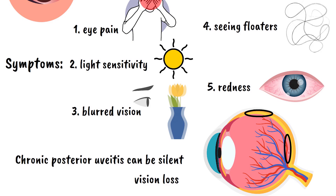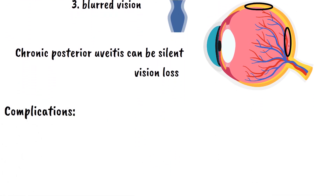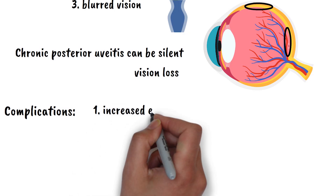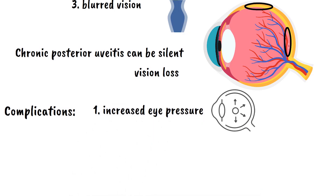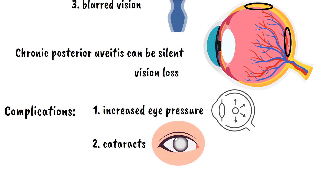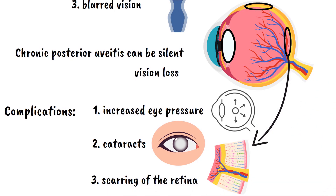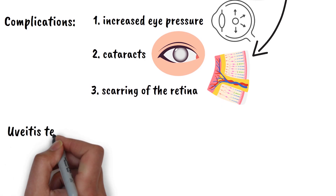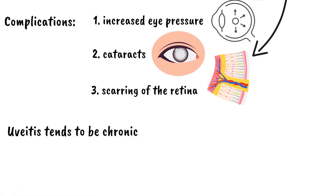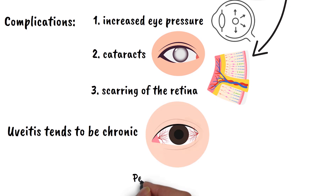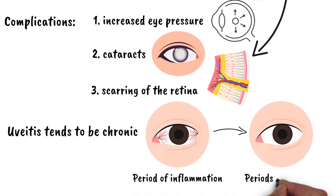The inflammation associated with uveitis can lead to several serious complications if not properly managed. Increased eye pressure similar to glaucoma can develop when inflammation affects the eye's drainage system. Cataracts can form when inflammation affects the lens. Most seriously, the inflammation can cause scarring of the retina or other critical eye structures, leading to permanent vision loss. Uveitis often tends to be a chronic, recurring condition, with many people experiencing periods of inflammation followed by remission, requiring ongoing monitoring and treatment throughout their lives.